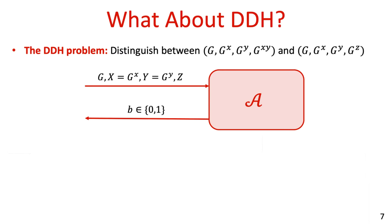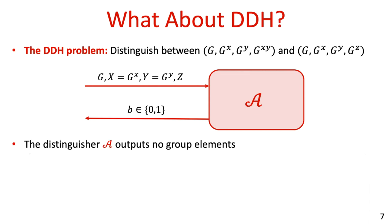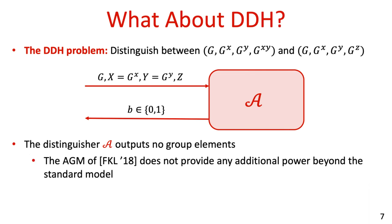Now let's see what happens if we try to apply the AGM to deduce something about the hardness of the Decisional Diffie-Hellman problem. In this problem, the adversary receives a generator g, two group elements g to the x and g to the y, and an additional group element Z. The adversary has to distinguish between the case in which Z is g to the xy and the case in which Z is a randomly chosen group element. The output is a bit b indicating its decision. Observe that the distinguisher A outputs only a single bit and no group elements. Hence, the algebraic group model of Fuchsbauer et al. coincides with the standard model here — it does not provide any additional power for reducing DDH beyond that of the standard model.